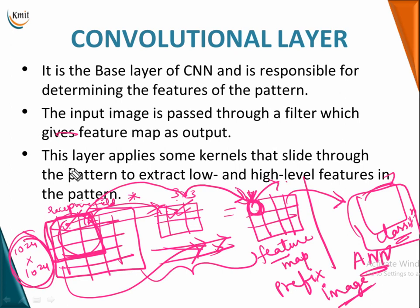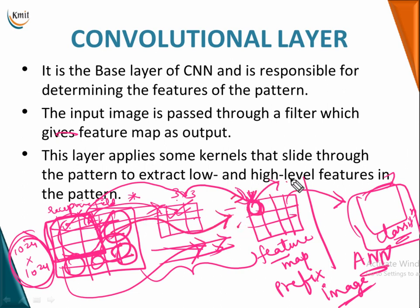This convolution layer applies kernels that slide through the pattern to extract low and high level features. Lower and higher level features — edges and so on — are determined by applying multiple convolution layers. This layer is very important in a convolutional neural network: kernels or filters keep sliding throughout the image until the entire image is covered and a feature map is extracted.